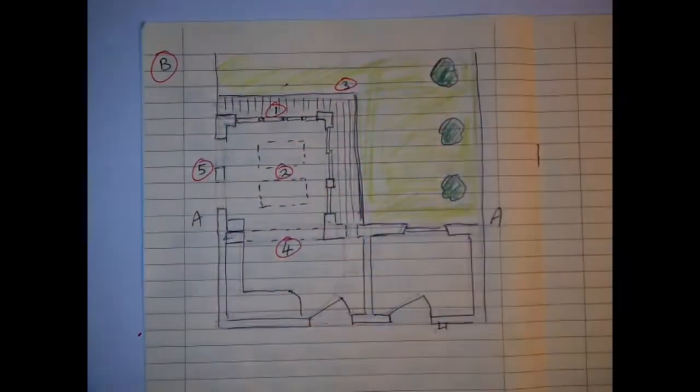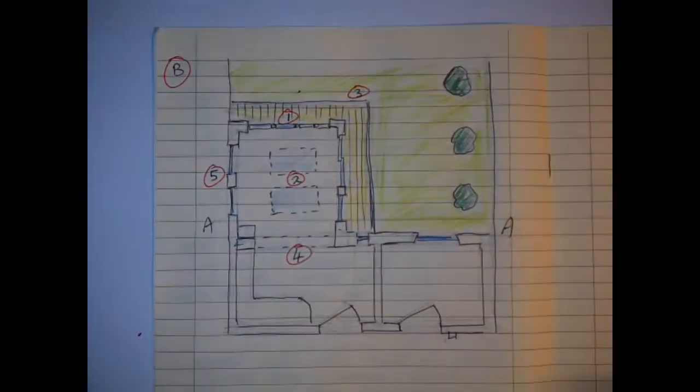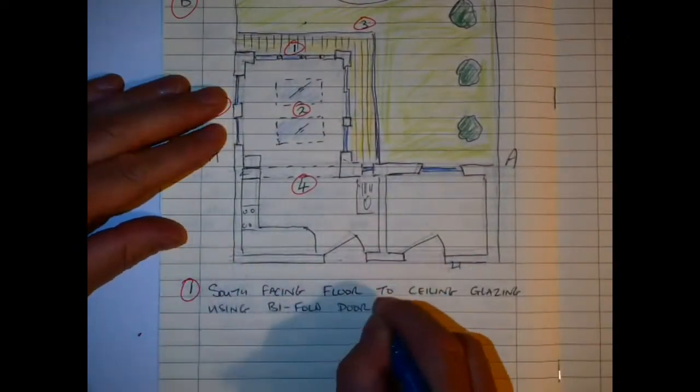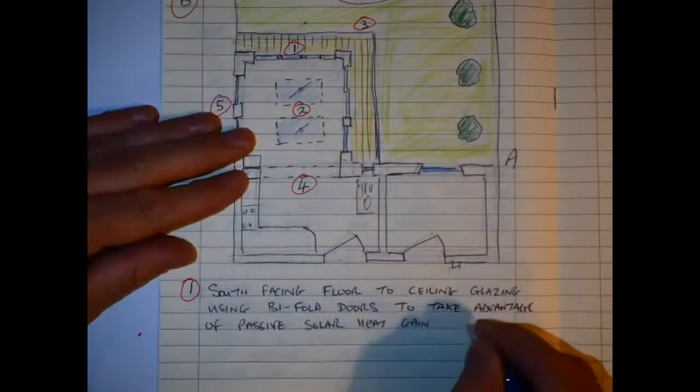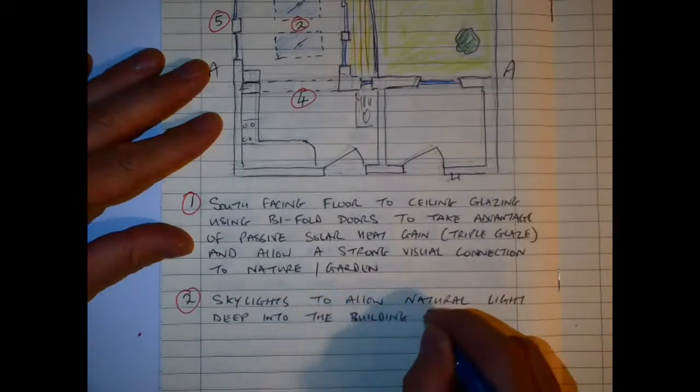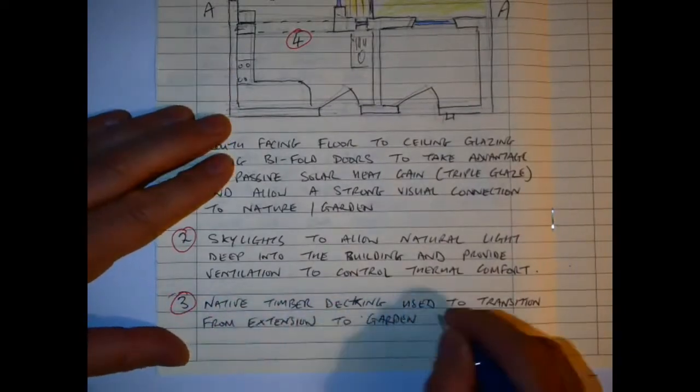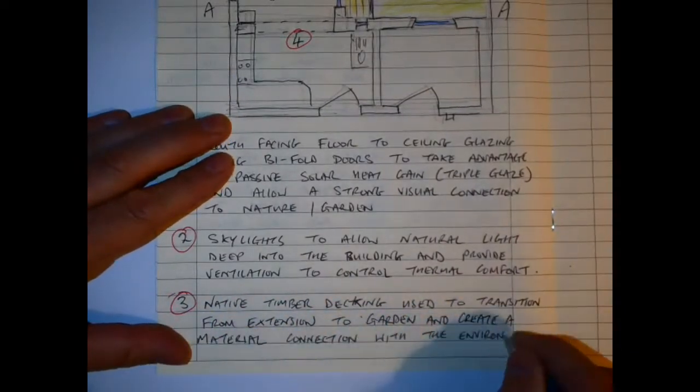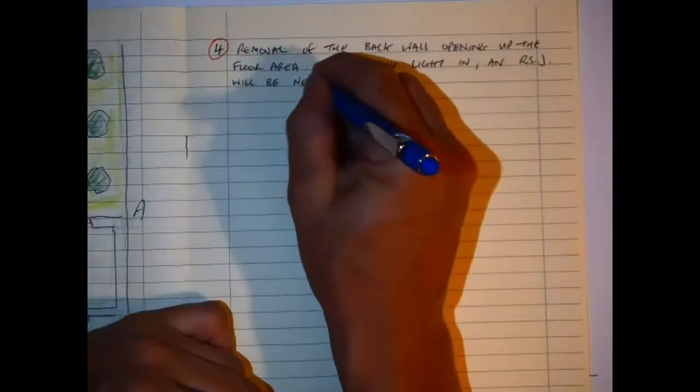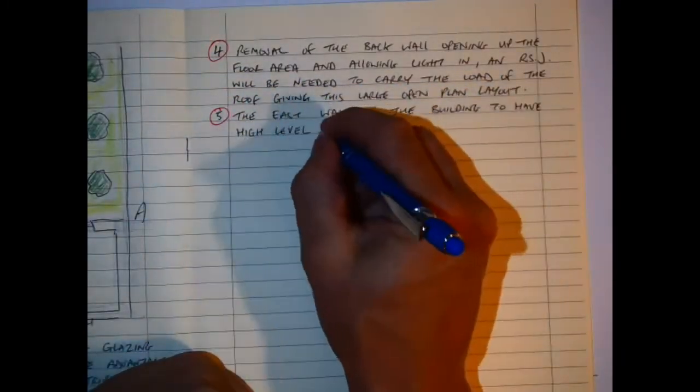I'm going to use a little bit of color to lift the sketch off the page. South facing floor to ceiling glazing using bifold doors to take advantage of passive solar heat with triple glazing. Two is the skylights to allow natural light deep into the building and provide ventilation control. Three, native timber deck as the transition from the extension to the garden. Number four is the removal of the back wall opening up the floor area, with inclusion of an RSJ. And the east wall to have a high level narrow longitudinal window to afford privacy and allow morning sun to penetrate the building, keeping with the circadian rhythm.